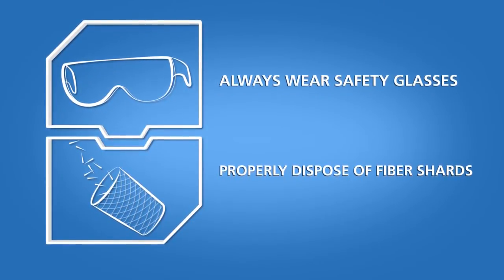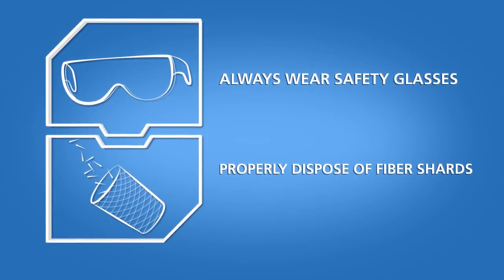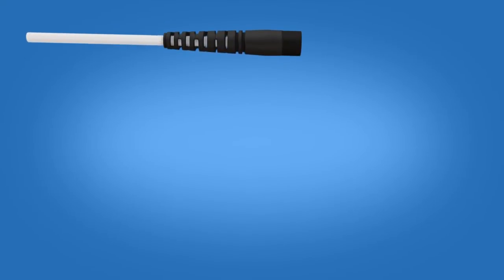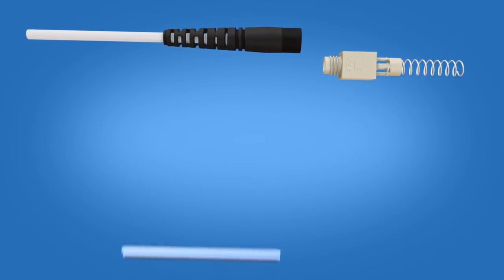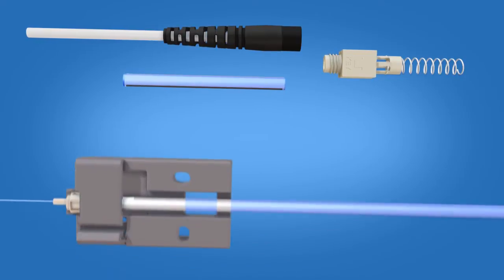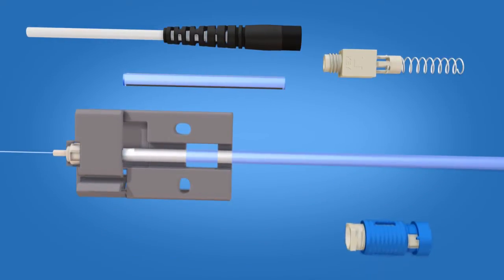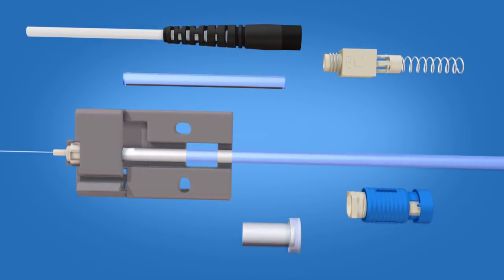The ST fuse connect connector includes the following materials: a boot unit, a spring unit, a protective sleeve, a ferrule unit, connector housing, and a dust cap.